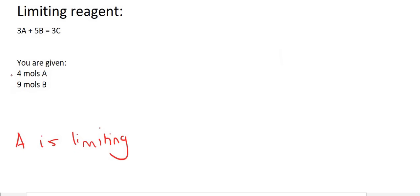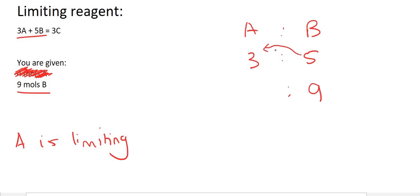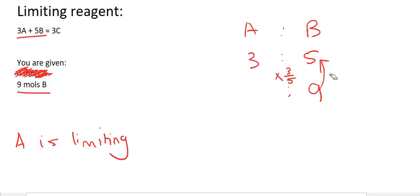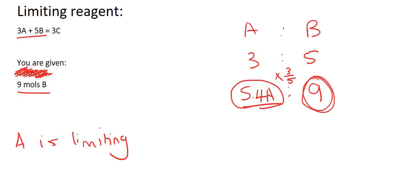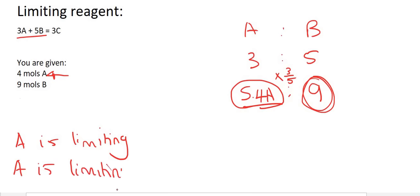Let's do it the other way around — now we'll cross out A. A to B is a 3 to 5 ratio. We have 9 moles of B. To go back the other way, you times by 3 over 5 — or you can say 9 divided by 5 times by 3. That gives us 5.4. So if we use all of B, using 9 moles, then we'll need 5.4 for A. But A only has 4 moles and we needed 5.4, so A is limiting once again.